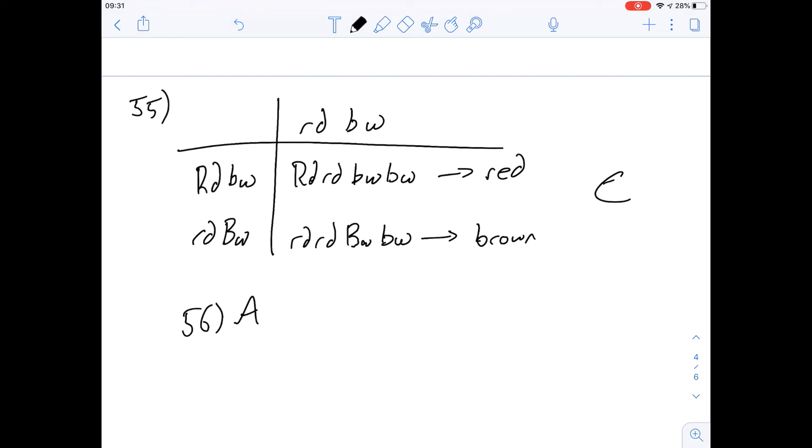C is obviously not going to be right and it's true also for D because if you're homozygous dominant for red then you're not going to get brown eyes you'll get maroon, and if you're heterozygous for red you're going to get maroon eyes not brown. So the answer therefore has to be A.